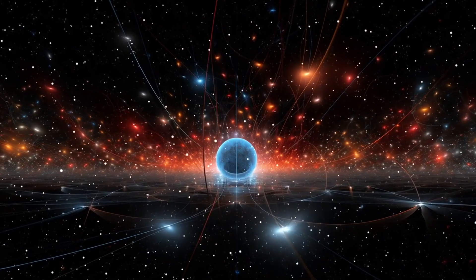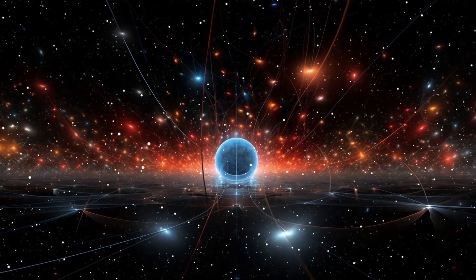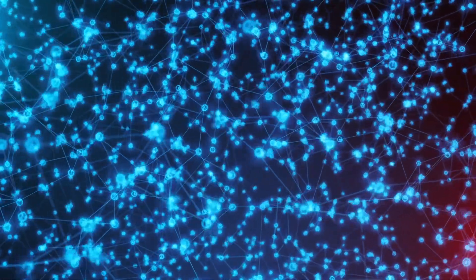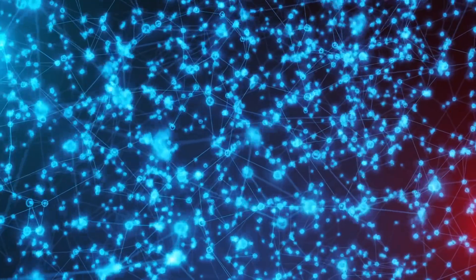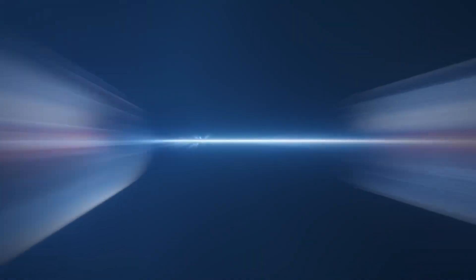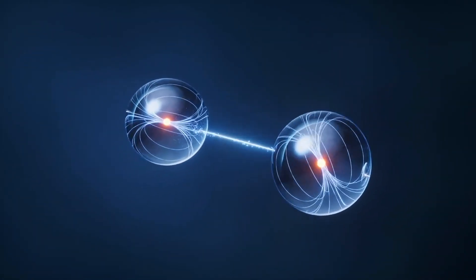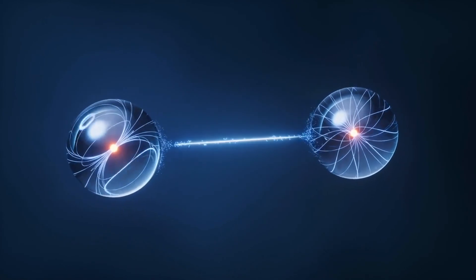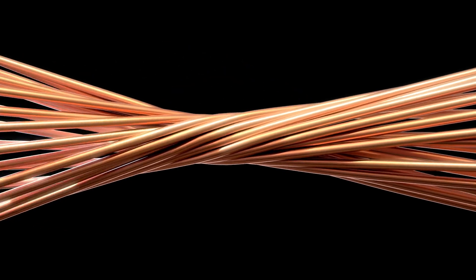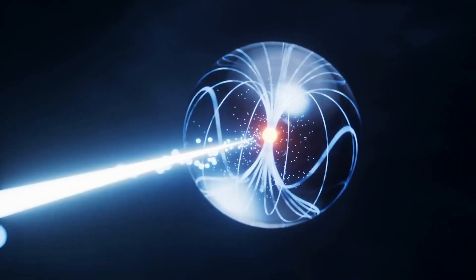Quantum teleportation isn't about teleporting objects or humans like in movies. It's about transferring information from one place to another using a phenomenon called quantum entanglement. Here's a real-world analogy. Imagine two spinning coins on opposite sides of the earth. When you flip one coin, the other instantly shows the same result, no matter the distance. That's quantum entanglement. Strange, isn't it?